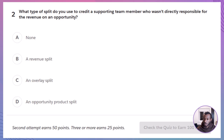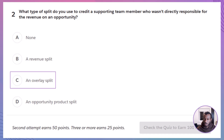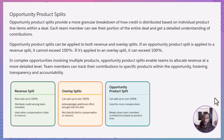Question 2: What type of split do you use to credit a supporting team member who wasn't directly responsible for the revenue on an opportunity? A. None. B. A revenue split. C. An overlay split. D. An opportunity product split. The correct answer is C — an overlay split. Overlay splits are designed to allocate credit beyond the primary revenue assignment. This means you can credit team members who contributed support or expertise to the deal, even if they didn't directly impact the revenue. Revenue splits, on the other hand, are for dividing revenue among those directly responsible for closing the deal and must total 100%. Overlay splits can exceed 100%, accommodating the additional contributions of supporting team members. Opportunity product splits pertain to credit on individual products within a deal, not general support contributions.